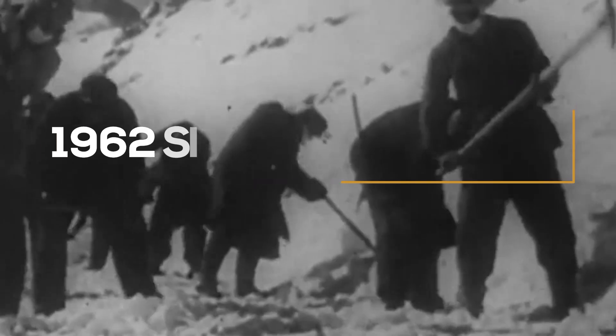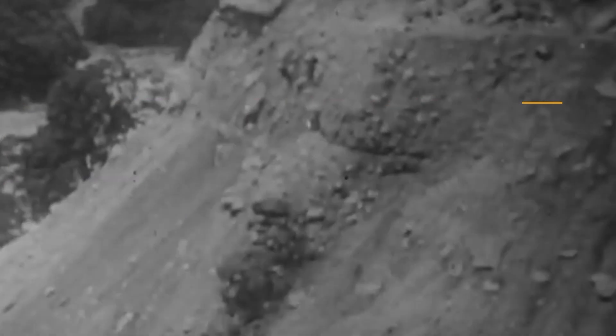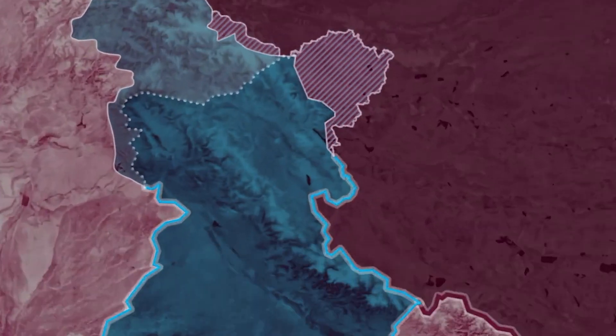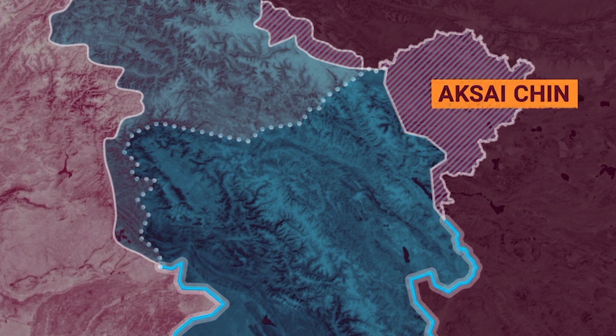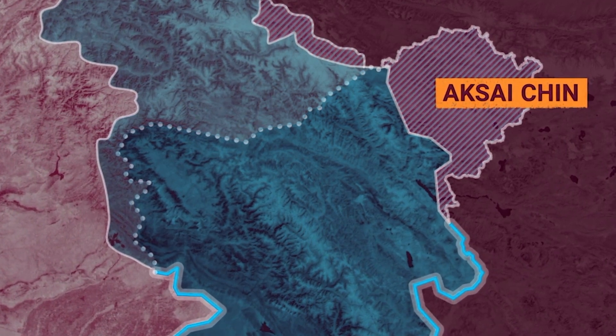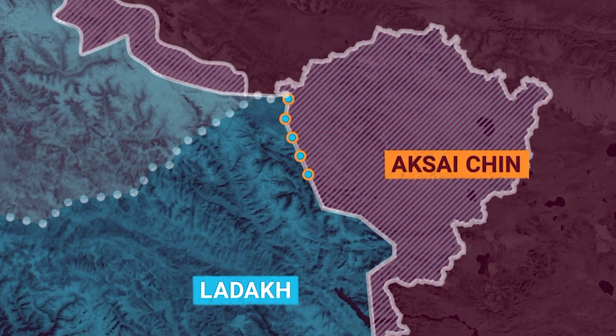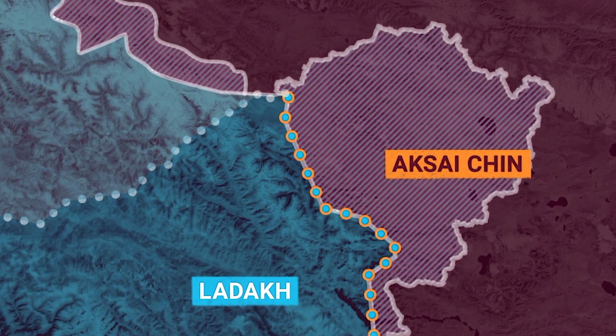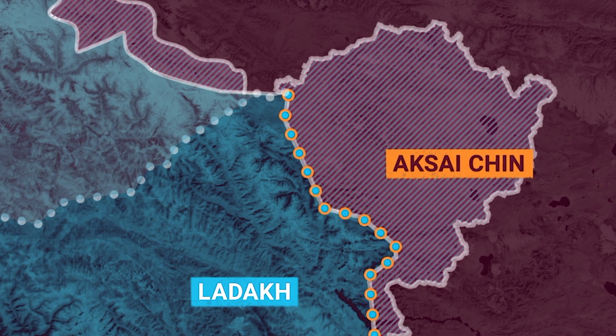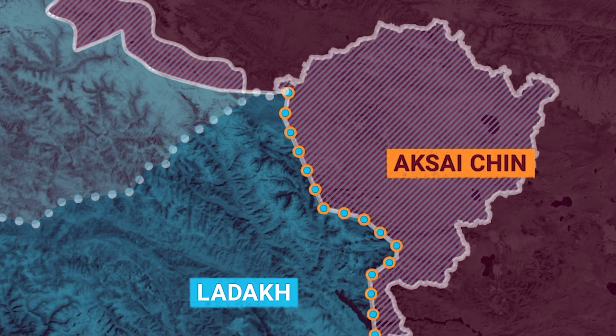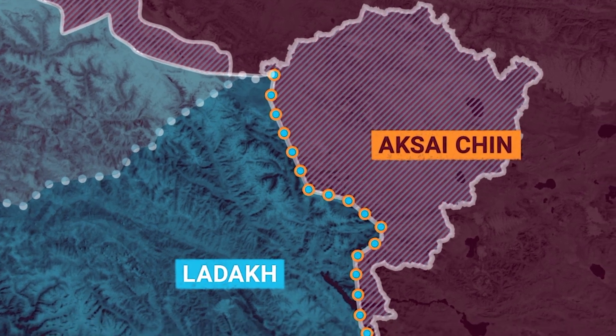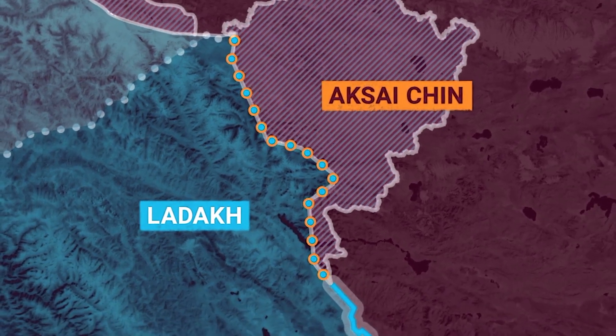The first confrontation took place when India found China building roads in a region that India views as its territory, which led to the Sino-Indian War of 1962. The two countries fought a four-week war over the border dispute, in which thousands of soldiers died on both sides. China was able to occupy Aksai Chin, a strategic corridor linking Tibet to western China. The war ended with a ceasefire and the confirmation of a de facto boundary known as the LAC — Line of Actual Control — which was not demarcated. Since then, there have been numerous conflicts along the borders, making this the longest disputed boundary on the planet.